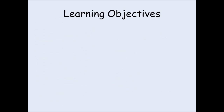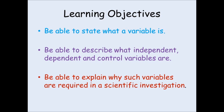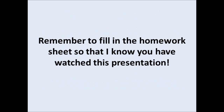So that was a reasonably quick introduction to the three main variables used in scientific investigations. Hopefully you should now be able to state what a variable is, describe what independent, dependent and controlled variables are, and explain why such variables are required in a scientific investigation. Please fill in your worksheet so I know you've watched this presentation. Thank you.